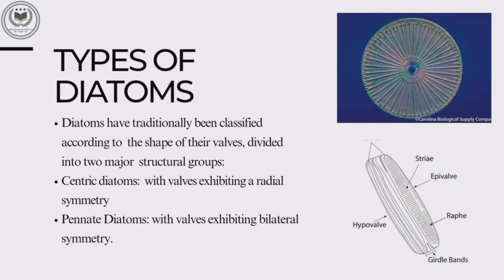Diatoms have traditionally been classified according to the shape of their valves, divided into two major structural groups. The first is centric diatoms and the second is pinnate diatoms. Centric diatoms have valves exhibiting radial symmetry, while pinnate diatoms have valves with a different structural arrangement.